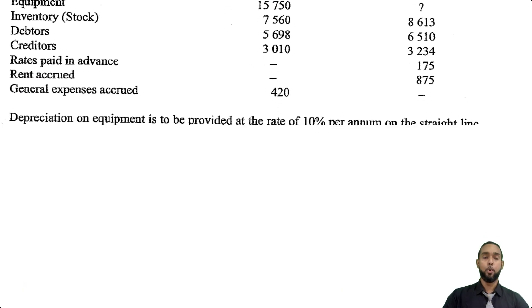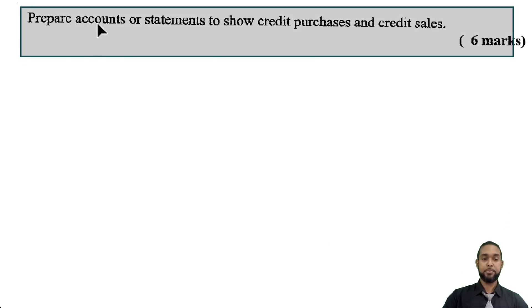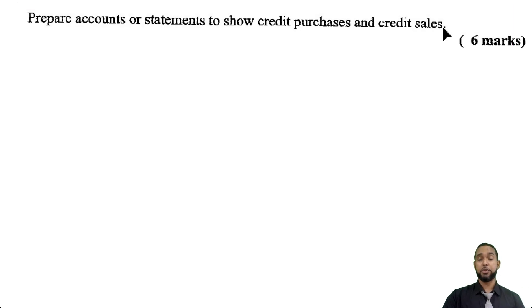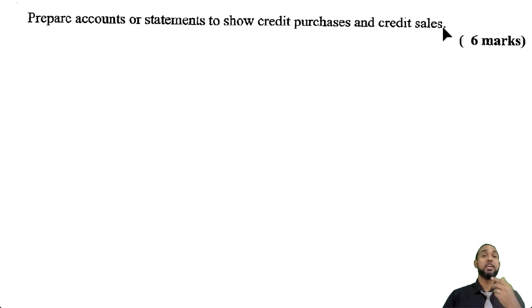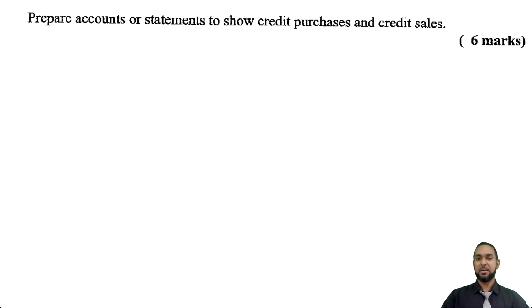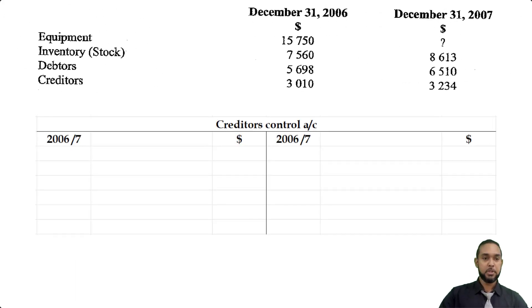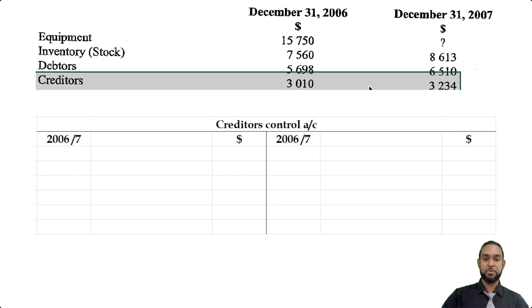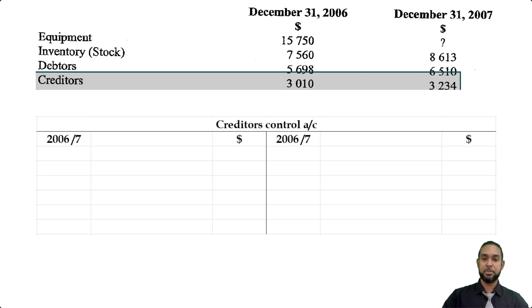Let's take a look at part B. Part B says prepare accounts or statements to show credit purchases and credit sales. Long story short, they're asking us to do a creditors control account and a debtors control account. So let's tackle the creditors control account first. We're going to go to our list of balances and put in the opening and closing balances for creditors.